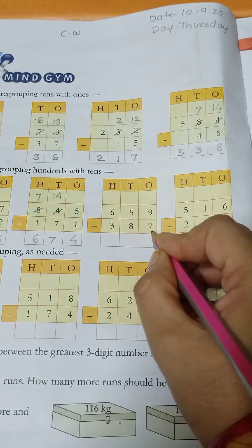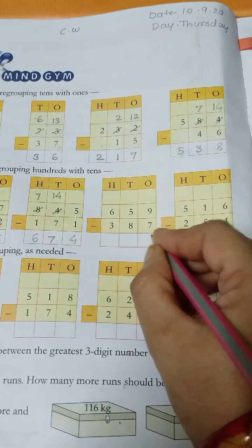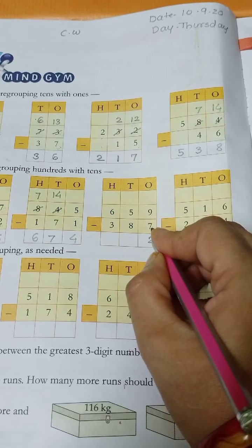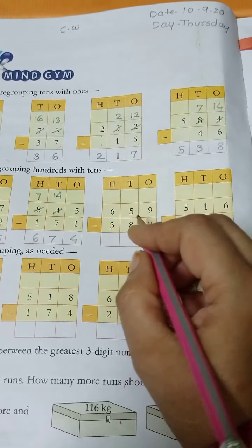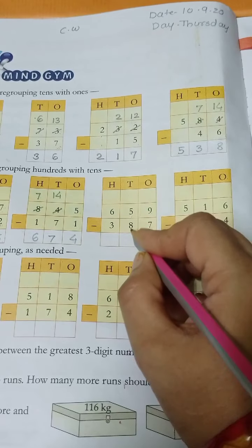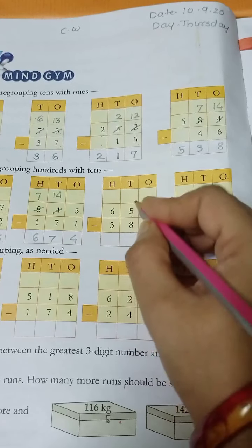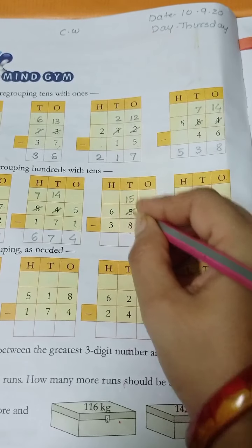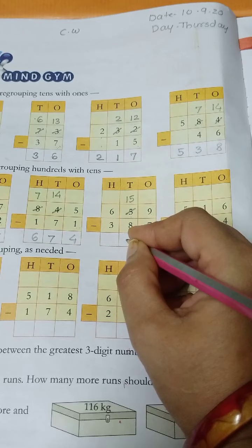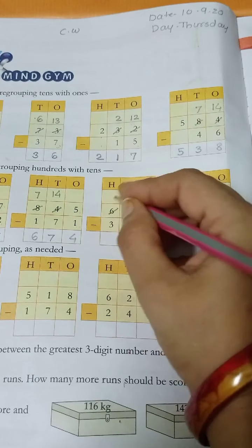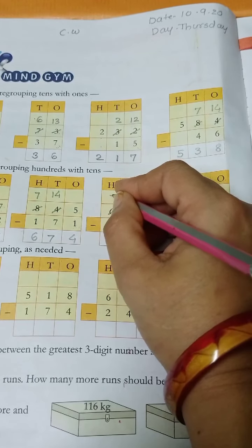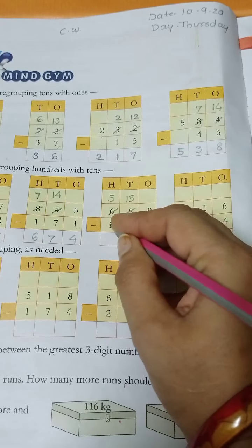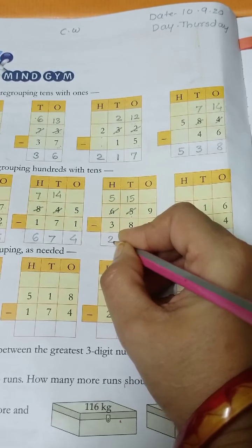Then next, 9 minus 7 is 2. Greater number and smaller number, so easily you can minus it. Then 5 minus 8, is it possible? No. So 10 plus 5 is 15. Then 15 minus 8 is 7. 1 cut. 6 minus 1 is 5. Then 5 minus 3 is 2.